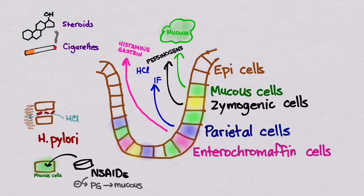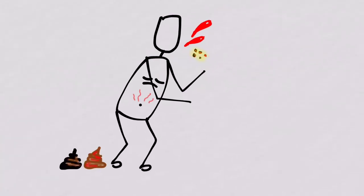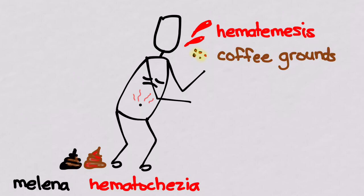Of course, we also know that steroids and cigarettes don't help. So how does upper GI bleeds present? You can have blood coming out the top or out the bottom. Blood can either be frank blood coming out as hematemesis or partially digested as coffee grounds. If it comes out the bottom, if it's partially digested, it's melena or blood mixed in with stool as hematochezia.